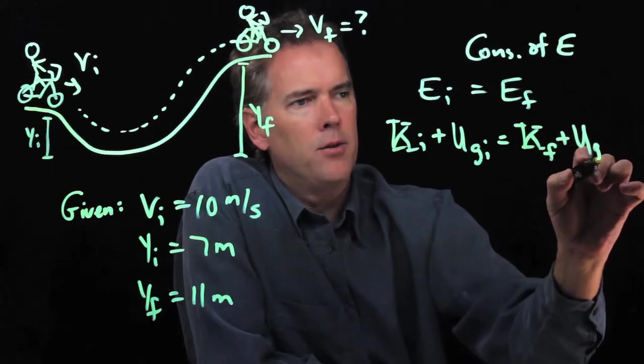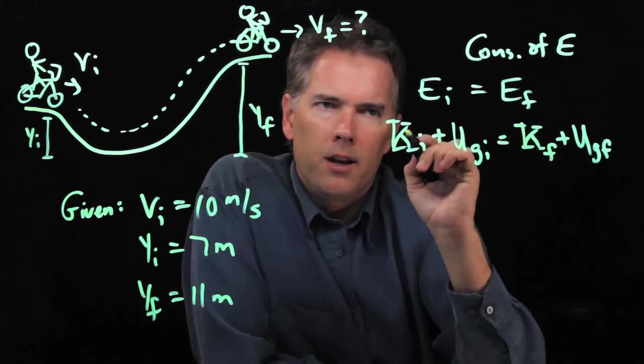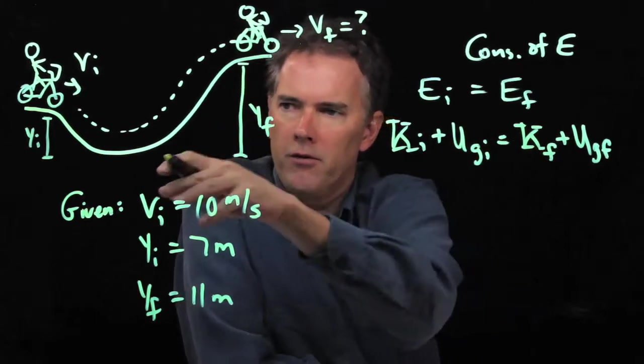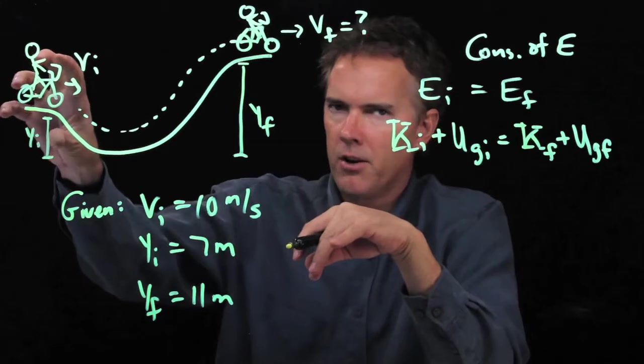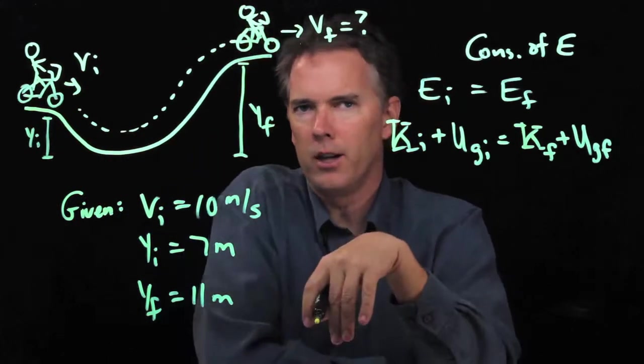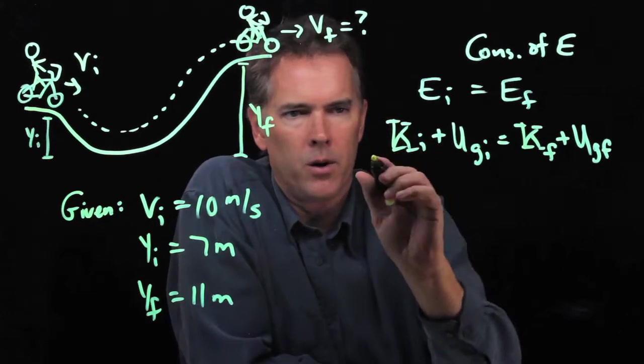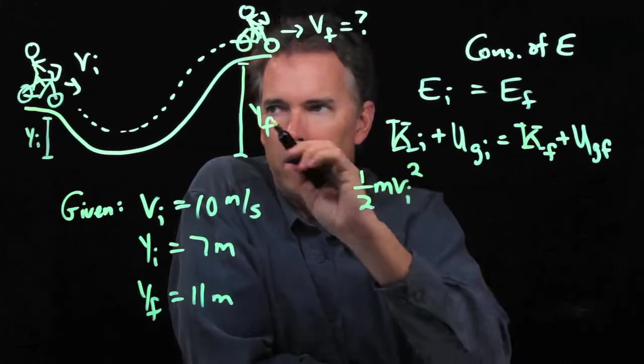And we have gravitational potential energy. We're up at height Yf. Conservation of energy is really nice because you can in fact skip that whole middle section. Whatever energy is there initially has to be there finally, and you put that final point wherever you like. We know what kinetic energy is: it's one half mv squared. Initially we're going at Vi.